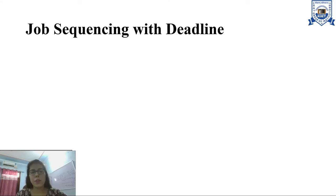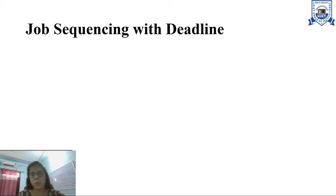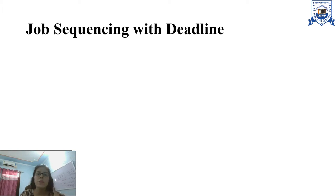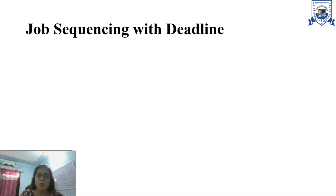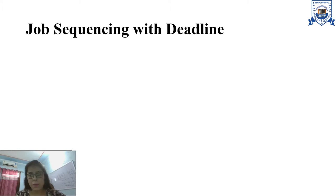Hello, we are going to discuss the job sequencing with deadline problem using branch and bound. You have seen this job sequencing problem in the past and might have solved it with different approaches. But when we talk about branch and bound, we have to modify its definition a bit. Let's see what that modification is.